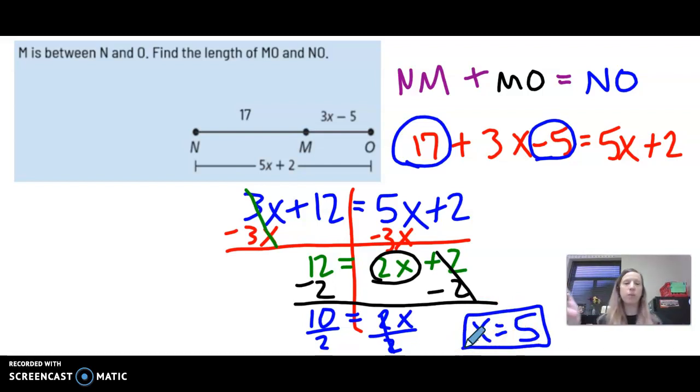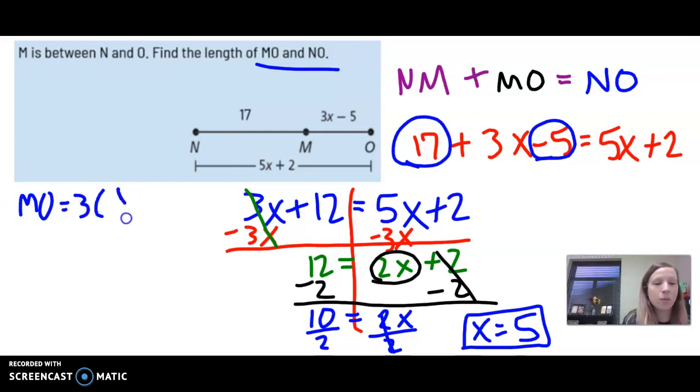Now, in addition, in this problem, it says to find the lengths of these two segments. So we're not just finding x, we need x to help us find the length of MO. So MO is 3x minus 5. Notice I left a set of parentheses where the x was. I'm going to plug in what we got for x, which was 5.